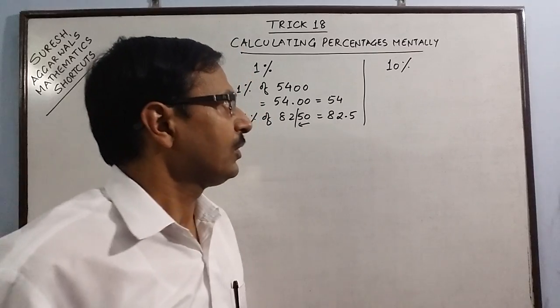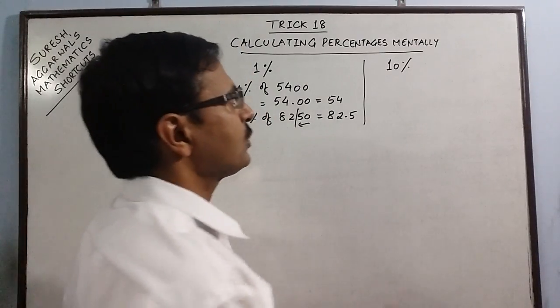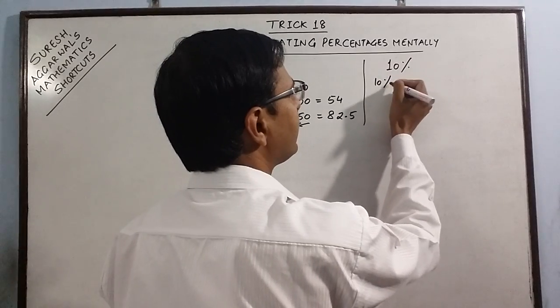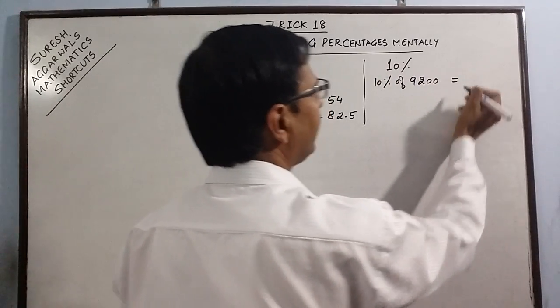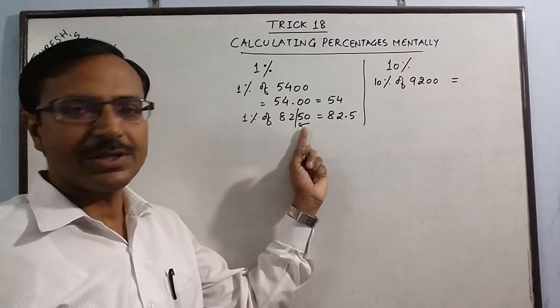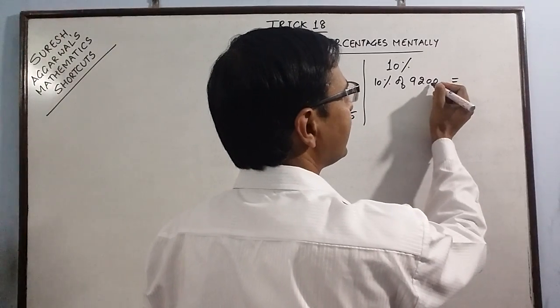Similarly the concept of 10% is also very important. Suppose you have to calculate 10% of any quantity, 9200, then instead of having two digits you select just one digit from the right and put a decimal thereafter.